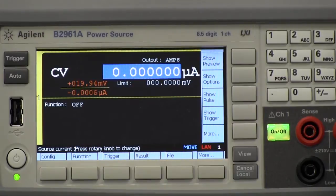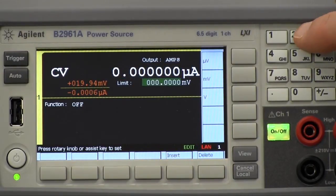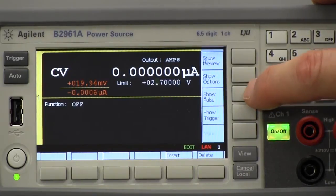Now I have to go down and set a limit of voltage. In this case, for this device, 2.7 volts is a good number.